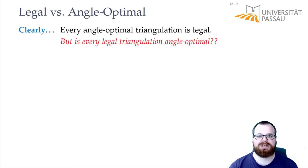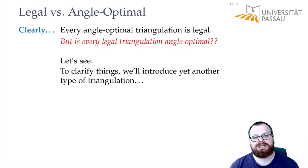But what about the other direction? Is every legal triangulation also angle-optimal? Or could it maybe be that we have to take some detour, add some more illegal edges until we are able to get to a legal triangulation again, that maybe has a better angle vector? And to prove that, we need even another type of triangulation.